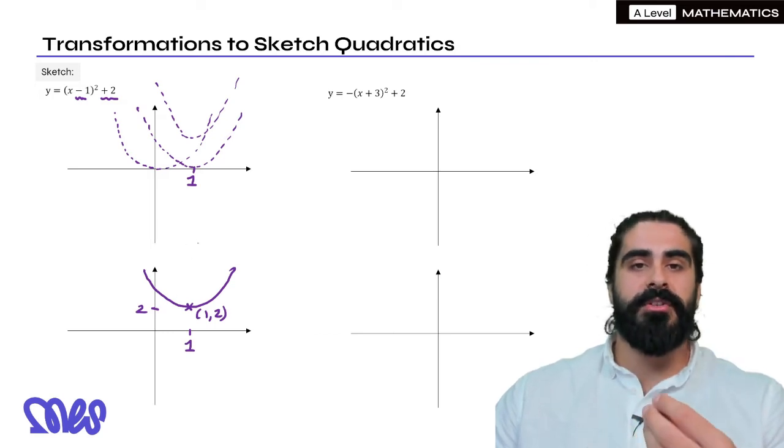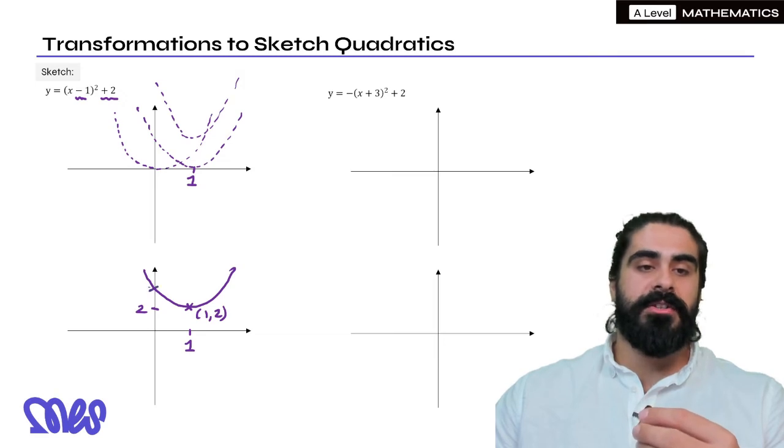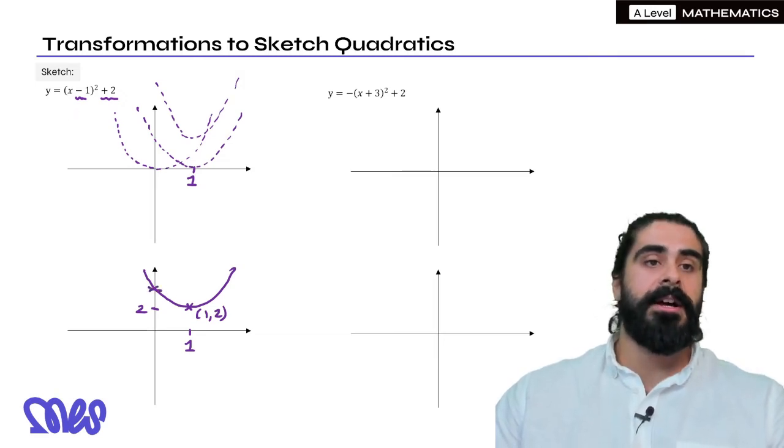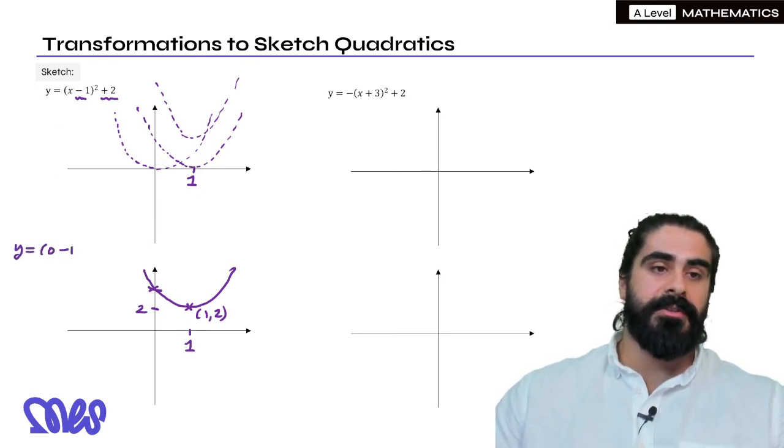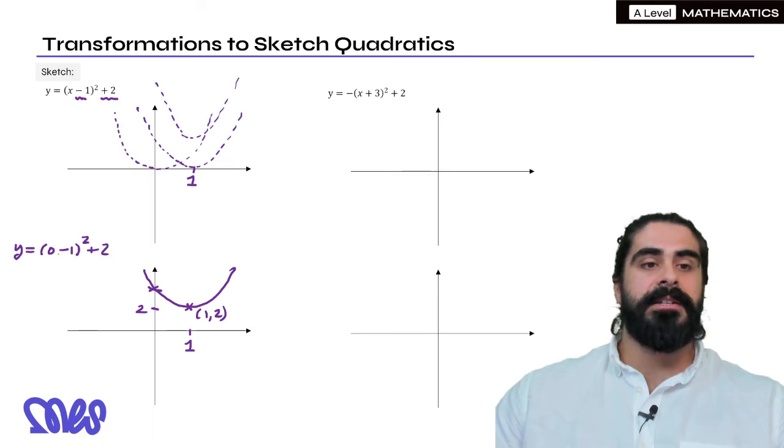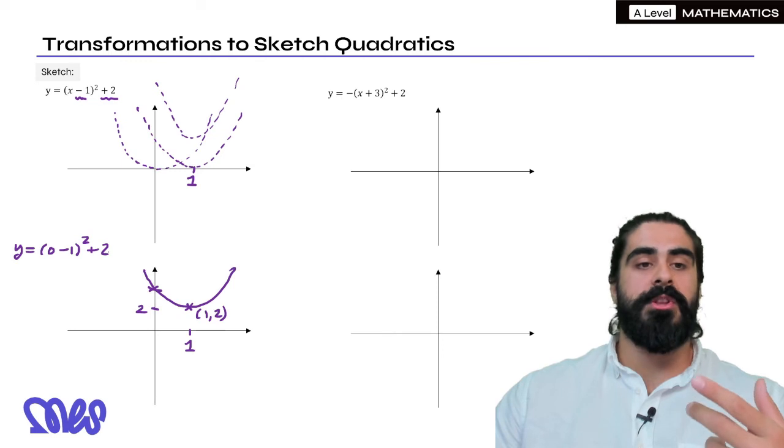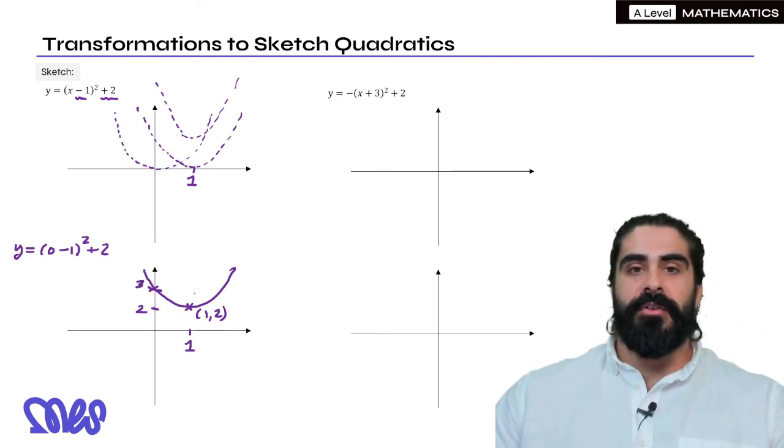Now just to make sure things look proper, always work out where it crosses the y-axis. But the quick way to do that is you just make x=0. So we get (0-1)²+2. 0-1 is -1. When you square that you get 1. When you add 2 you get 3. So that's a nice little sketch of our quadratic.